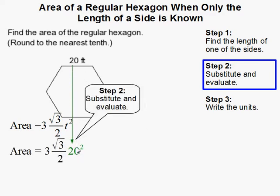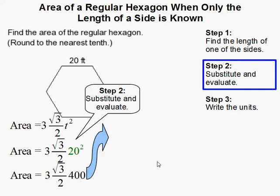So I substitute the 20 here. Now we simply evaluate. So 20 squared is 400. Then what I did next was I multiplied the 400 times 3 and I got 1200. Then I divided 1200 by 2 and I got this.